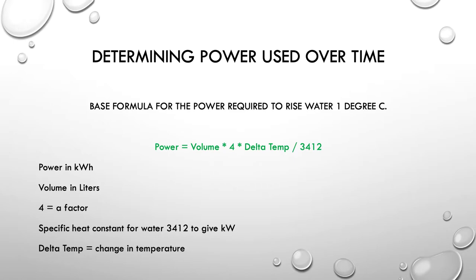So, determining the power used over a certain period of time, the base formula for power required to raise water by 1 degree C. The power is equal to the volume multiplied by 4 multiplied by the temperature difference divided by 3412, which is the specific heat of water.